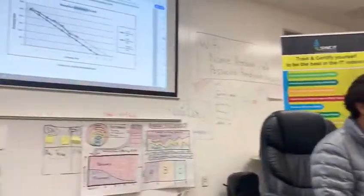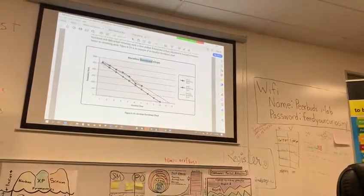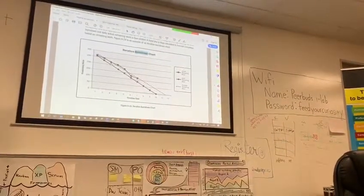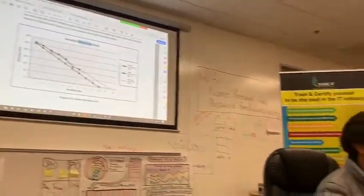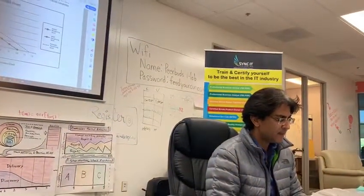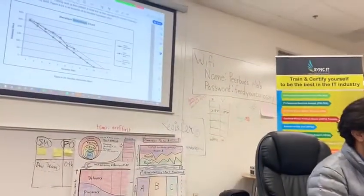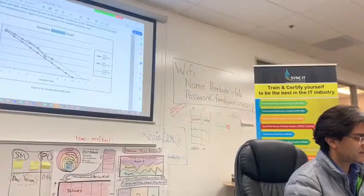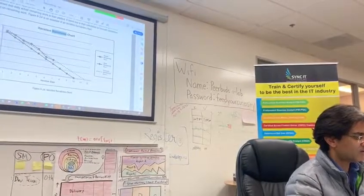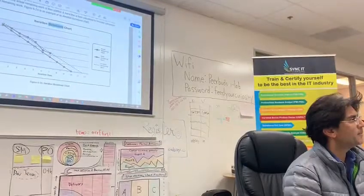Ideally, this is how it should look, but will you be doing the exact same amount of work every day? Not possible. Some days you'll achieve more, some days less. So in reality, your work may progress like this — sometimes more, sometimes less. This is the actual line: the amount of work remaining going down at a different pace than ideal.